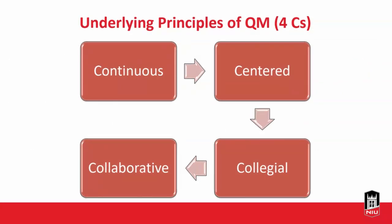Quality Matters operates on what I call the four C's. The first is being continuous — your course is always going to continue to evolve, and there's always room for improvement. Quality Matters also continues to update their rubric. Right now we are on the sixth edition of the QM course design rubric, and the seventh edition is scheduled to come out on July 5th of this year.